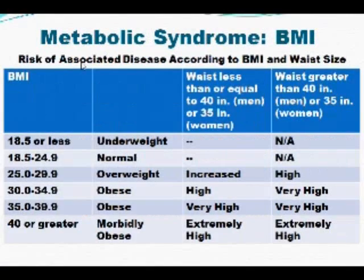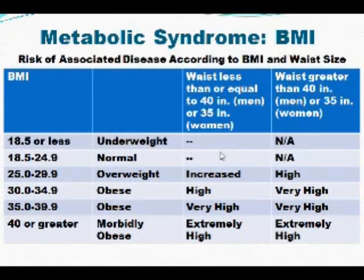Let's look at a table with metabolic syndrome and BMI. This table depicts how BMI is classified and how the combination of actual BMI and actual waist measurement more precisely predicts the risk of associated diseases such as heart attack, hypertension, diabetes, and even cancer. In the prior example, the fictitious person had a BMI of 25, putting them as overweight. If that person has a waistline of 40 inches or less for a male — or 35 or less for a female — that would put them at increased risk for developing those cardiovascular and other diseases.